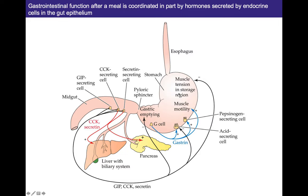GIP-secreting cells detect glucose and carbohydrates, then send a signal to the pancreas to start releasing insulin. Also, secretin, CCK, and GIP all feed back to the stomach to decrease gastric emptying. That seems counterintuitive, but it's not about dumping all of that food into the small intestines — it's about piecemealing it little by little.